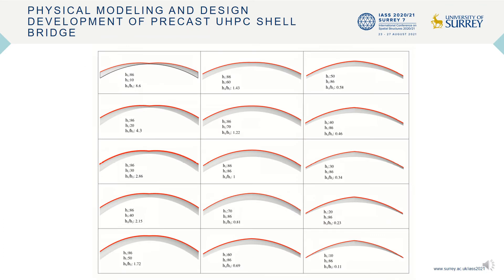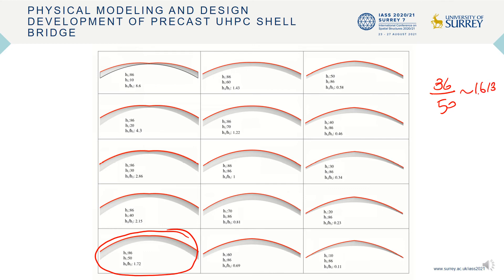We tried a range of different variations, all generated algorithmically in Rhino and Grasshopper. We realized the basic design we are planning to build the bridge with is in pretty good shape in terms of stress distribution for five centimeters of thickness. This is also a good ratio for aesthetics, because 86 over 50 is approximately 1.618 — the golden ratio.